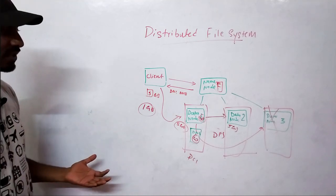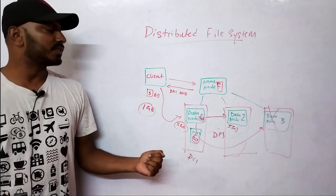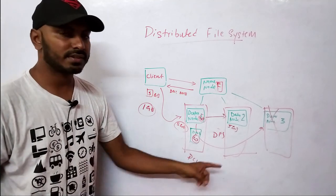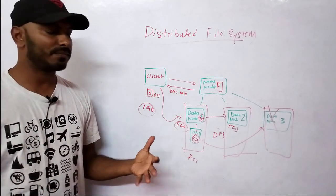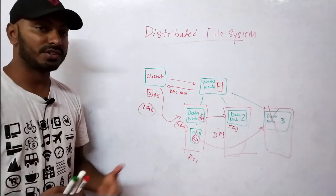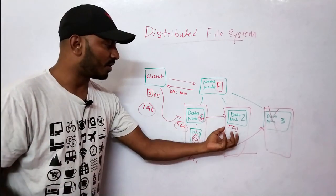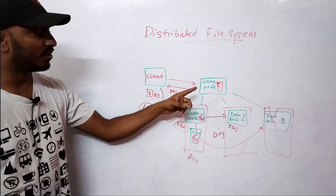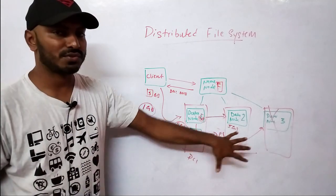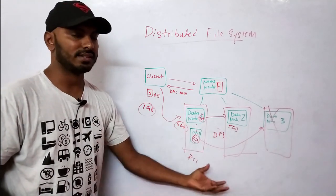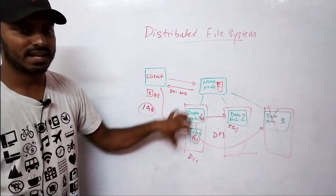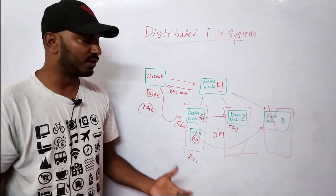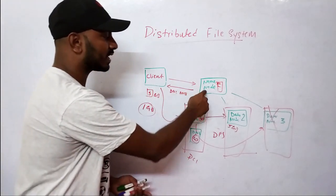You can use this same pattern to design many applications — wherever you need redundancy or safe copies of data. The design is: a Name Node holding metadata and a few Data Nodes holding the actual data. The Name Node controls all actions, manages health checks, and handles replication.